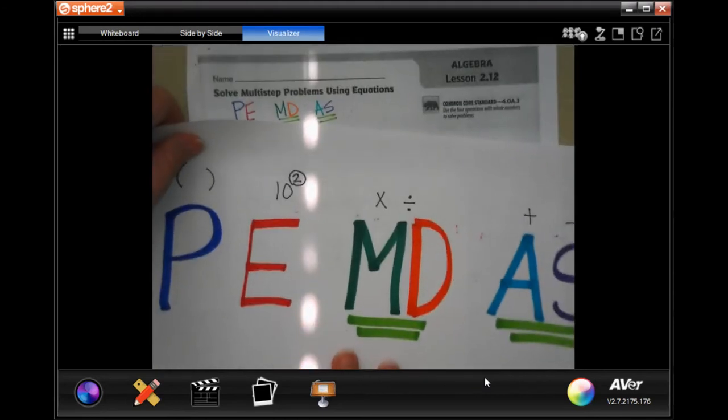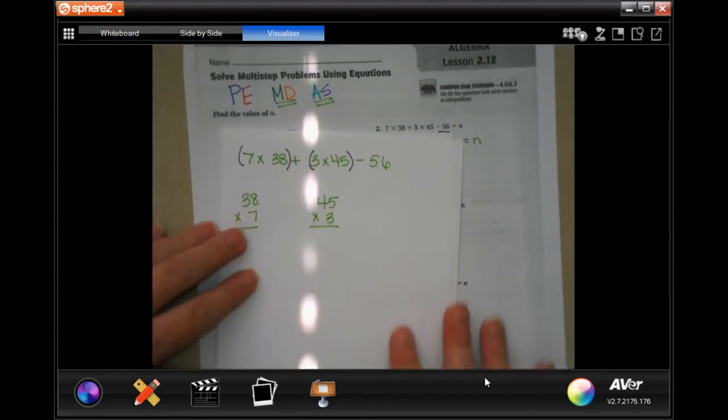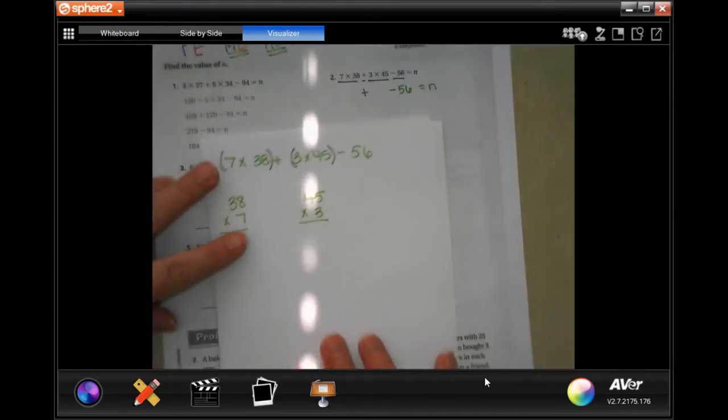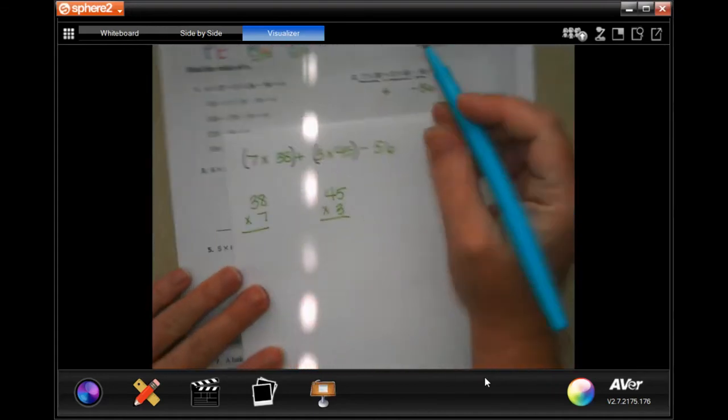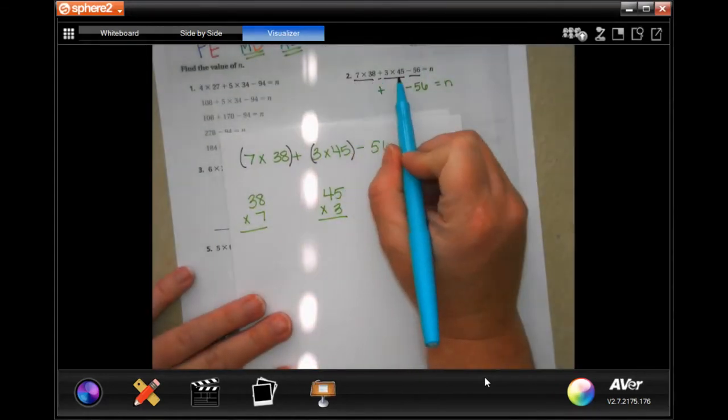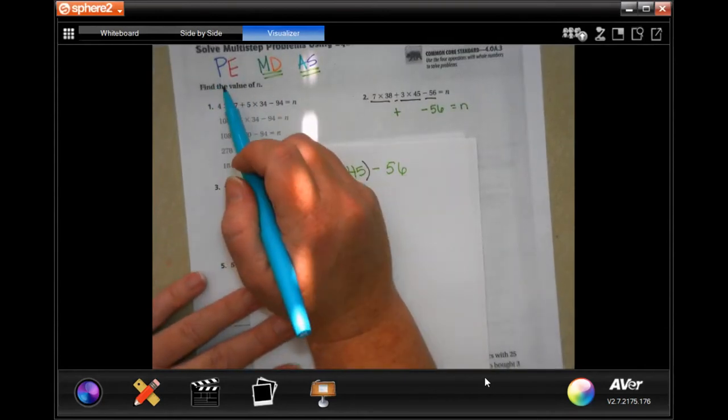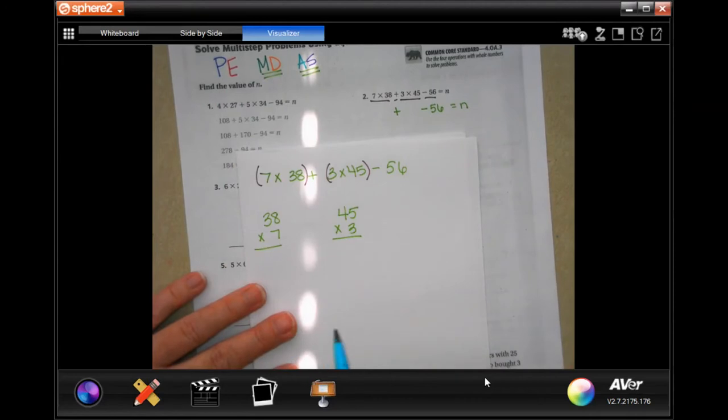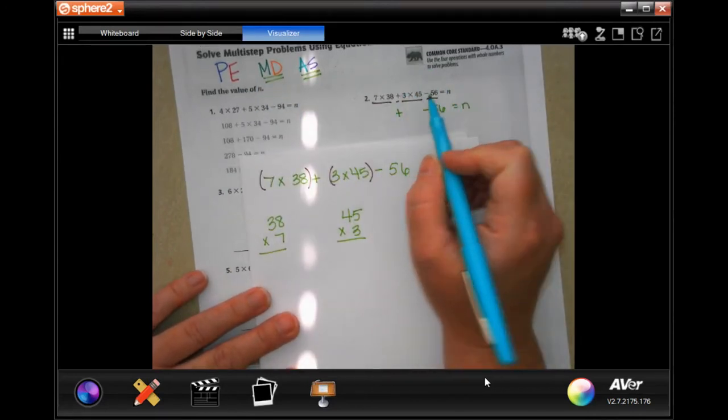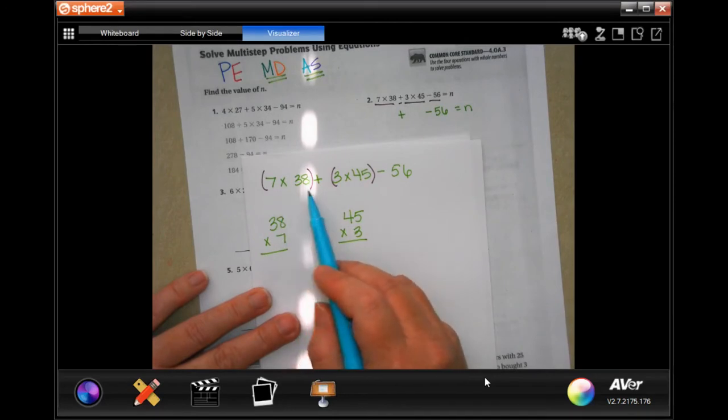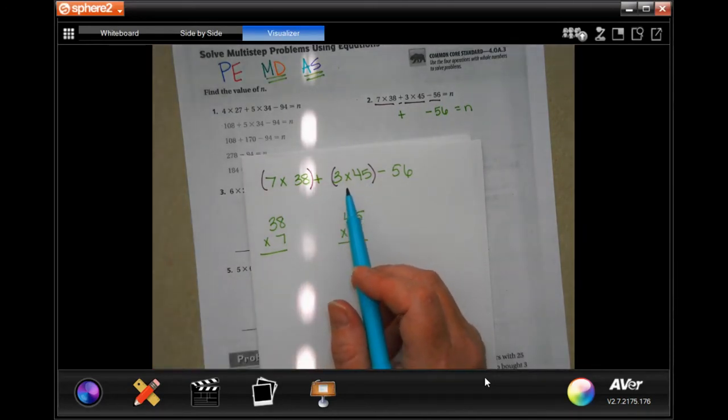So we're going to start with number two. They did number one for you, of course. So you'll see that you have seven times 38 and you have three times 45. Well, we don't have any parentheses and we don't have any exponents. I don't have to worry about those. So multiplication and division, well, there's two multiplications. So I rewrote it here and I wrote those in parentheses so that I would remember I have to do those first.